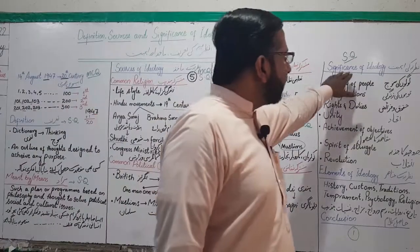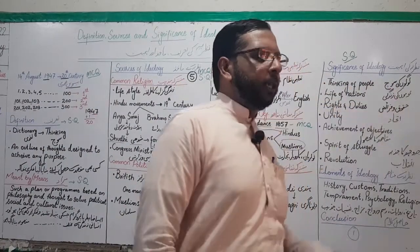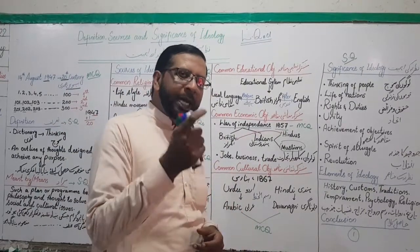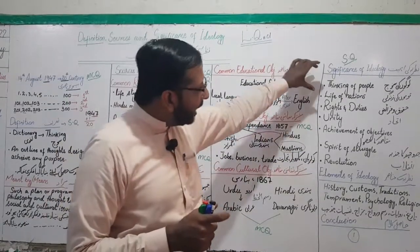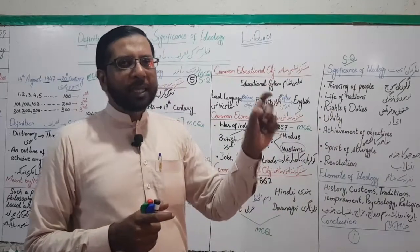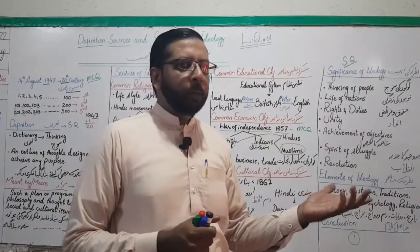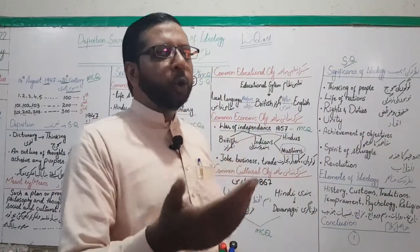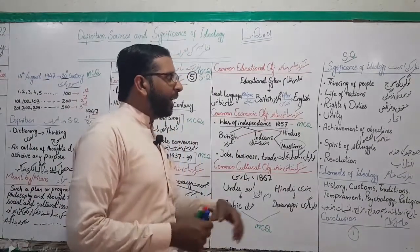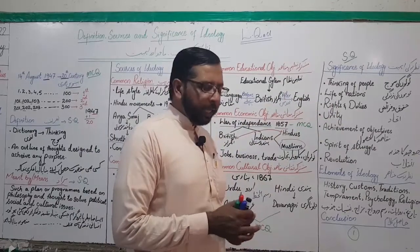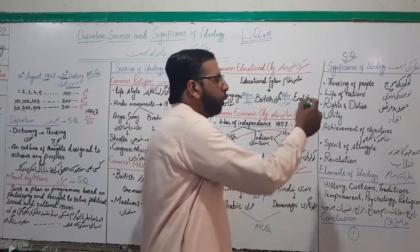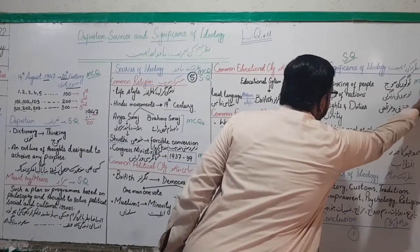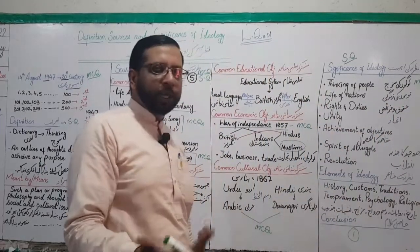Agla teesra point hai: significance of ideology — nazriya ki ahmiyat. Aapki books mein yeh paragraph form mein likha hai, lekin hum ise points mein convert karenge aur headings ke saath likhenge. Every sentence will be a separate point. Pehla hoga: thinking of people — nazriya logon ki soch ki akkaasi karta hai. 'Ideology reflects the thinking of people' — mark kar lijiye, as MCQ bhi puchha ja sakta hai. In fact, aapki books ki exercise ke andar jo fill in the blanks hain, pehli blank yahi hai.